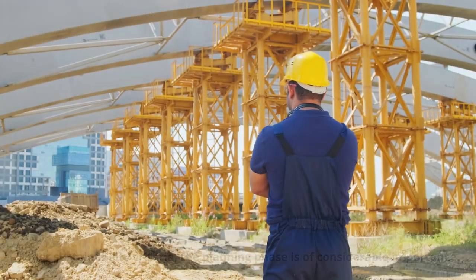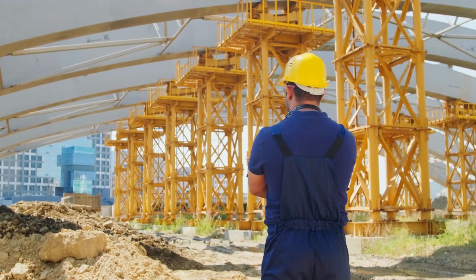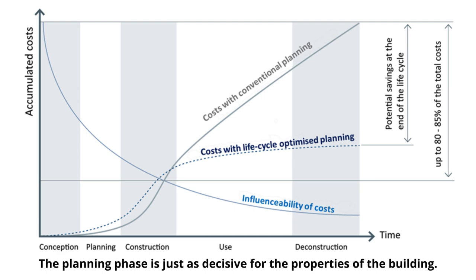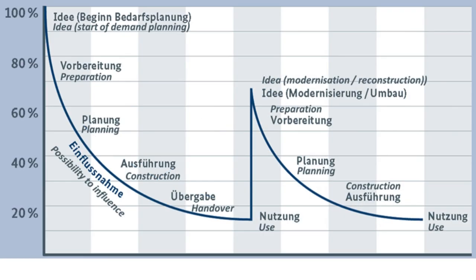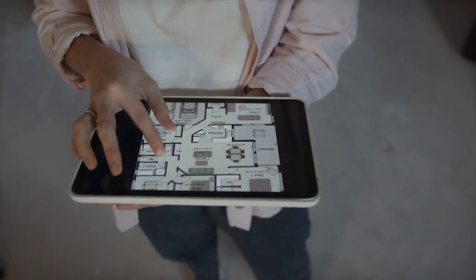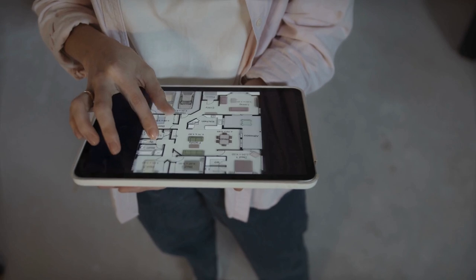Under sustainability criteria, the planning phase is of considerable importance — it is just as decisive for the properties of the building. Some basic approaches can be distinguished when planning for sustainability. First approach: comparison of construction costs and construction time, for example the construction of a kindergarten in solid or timber construction.